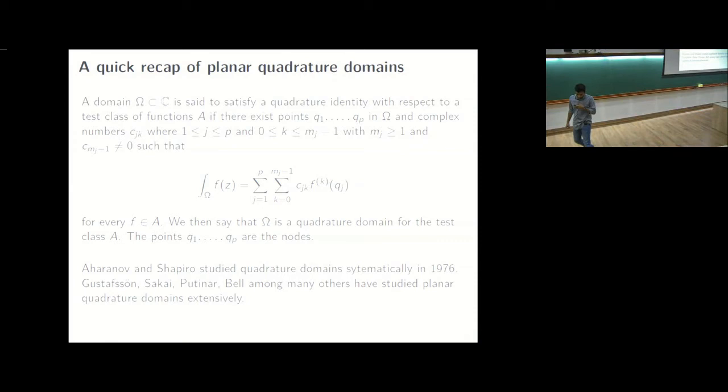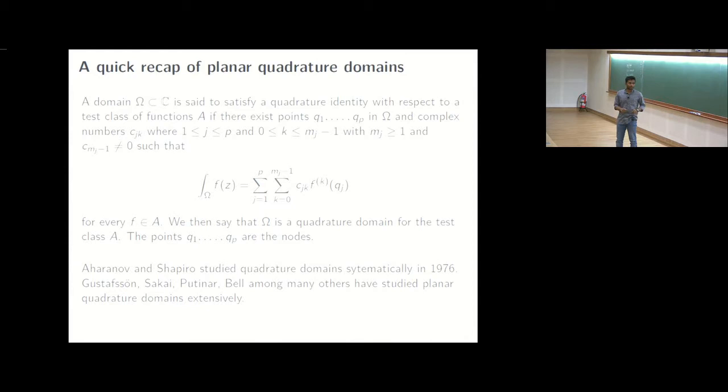And then later, I don't know when Shapiro systematically studied quadrature domains in 76, Gustafson picked it up from there and Makoto Sakai, Mihai Putinar are amongst the people who did it in the 80s and 90s. I'm not naming everyone but the prominent people who worked in this and Stephen Bell in the recent past, along with Kaushal.